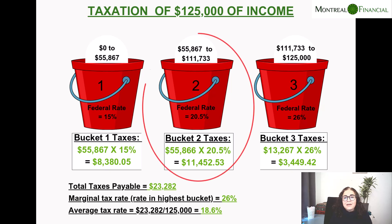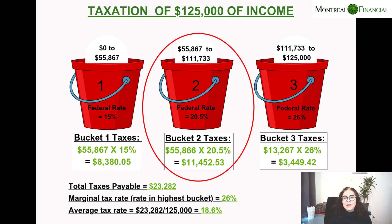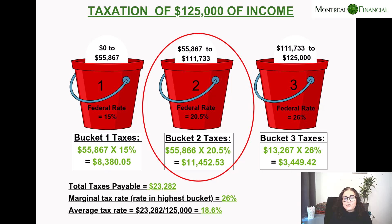In the second bucket, we have another $55,866, which is taxed at 20.5%. The tax amount here is $11,452, which is 20.5% of that second bucket. If you earned exactly $111,733, you would pay $8,380 plus $11,452. You are not paying the full amount at 20.5% — it's only the portion above the first tax bracket.